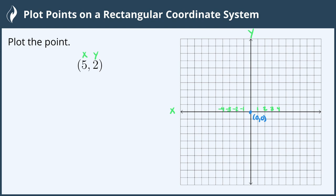The y-axis also has positives and negatives. Above the origin the y-axis is positive. Positive 1, positive 2, positive 3, positive 4 and so on.